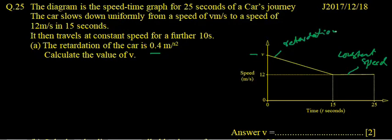So retardation is here and it is equal to slope, slope of this line. The slope of this line of the retardation is given as 0.4 meters per second squared. We have to find V.